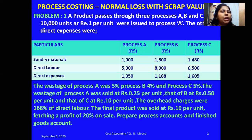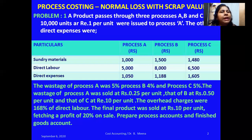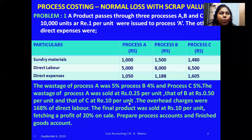The wastage percentage is applicable only on the input for each process. The wastage of Process A was sold at ₹0.25 per unit. In this problem we have a wastage percentage as well as scrap value. Whenever we have a scrap value for any wastage, that wastage is termed as normal loss, which will be credited in the respective process account with the units of wastage. Process B scrap is sold at ₹0.50 per unit and Process C scrap at ₹10 per unit.